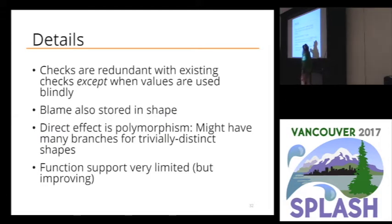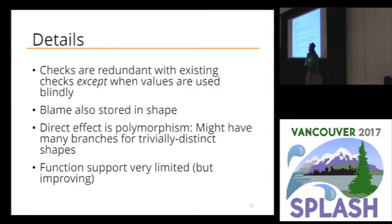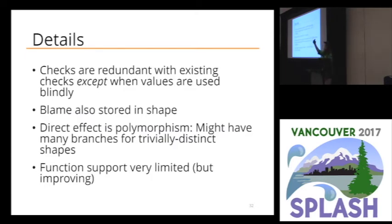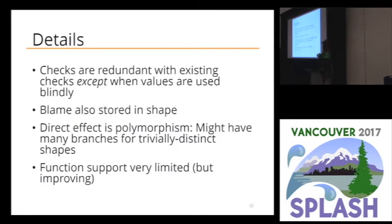As for implementation details, we stick blame in the shape as well — this isn't ideal but does give us blame tracking. The consequence of doing all of this is polymorphism: if you do have multiple shapes that can appear, they might be trivially different — same fields but different contracts — in which case I'll have multiple branches: if it's this shape do this, if it's this shape do this. That's not ideal and it does blow up the code. Function support right now is very limited though improving, and there's nothing fundamentally restrictive about it. All of these shapes have to do with object features, so we've been focusing on object features. It's in a remake of Safe TypeScript — Safe TypeScript is just TypeScript with checks — and we always check.